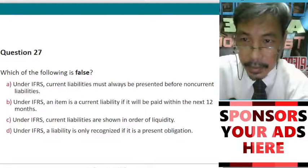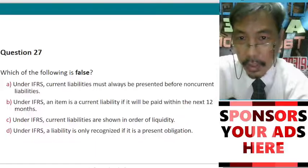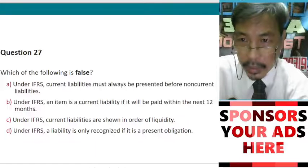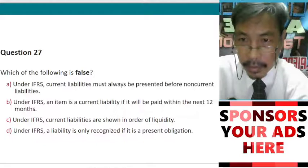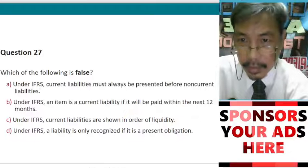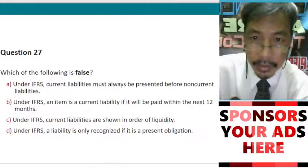C. Under IFRS, current liabilities are shown in order of liquidity. D. Under IFRS, a liability is only recognized if it is a present obligation.